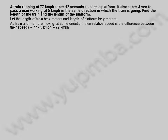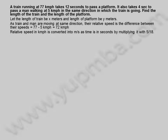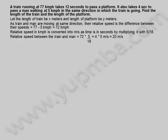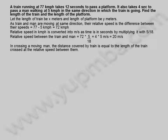As train and man are moving in the same direction, their relative speed is the difference between their speeds: 77 minus 5 kilometers per hour equals 72 kilometers per hour. Relative speed in kilometers per hour is converted into meters per second by multiplying with 5 by 18. Relative speed between the train and man equals 72 into 5 divided by 18, equals 4 into 5 meters per second, equals 20 meters per second.